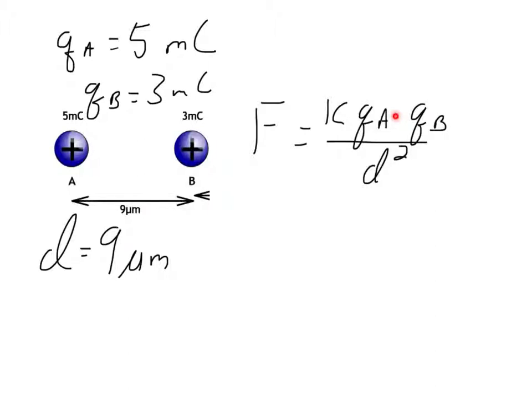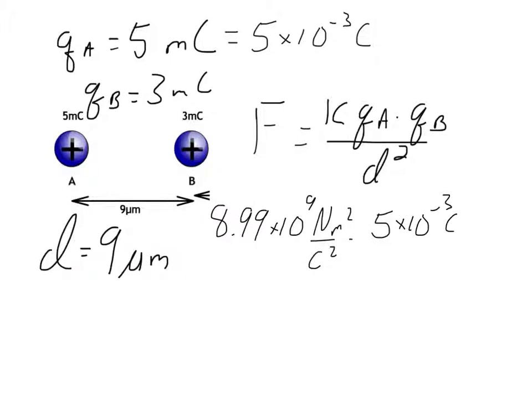So let's try and finish the question. The K value we said was 8.99 times 10 to the 9th Newtons meters squared over Coulombs squared. That's going to be times 5. And what I like to do at this point, instead of writing in 5 millicoulombs right into the problem, I'm going to convert that right away. So I'm going to say 5 millicoulombs equals 5 times 10 to the negative 3rd Coulombs. All the numbers should be recorded in Coulombs and meters in order to cancel out the units. Times 3 times 10 to the negative 3rd Coulombs divided by 9 times 10 to the negative 6th meters squared.